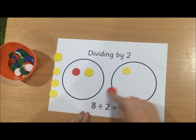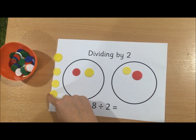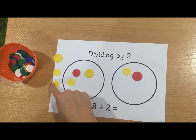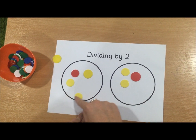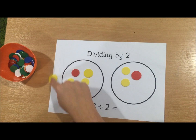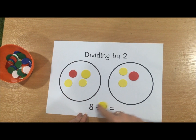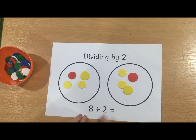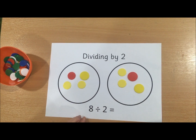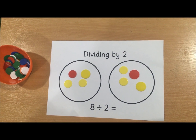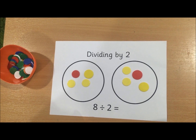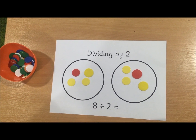We share them out equally — one for this group, one for this group — until all counters are distributed. Once we've shared them out equally, we then need to count just one of those two groups.